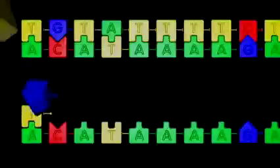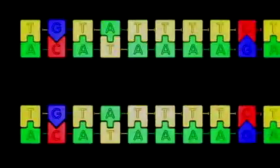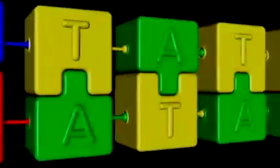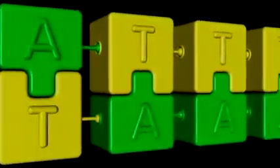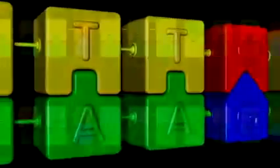A T opposite every A, an A opposite every T, a C opposite every G, a G opposite every C. And you have accomplished one of the great tricks of nature. You've taken one copy of the code and made two identical, perfect copies that can pass on to the next generation.